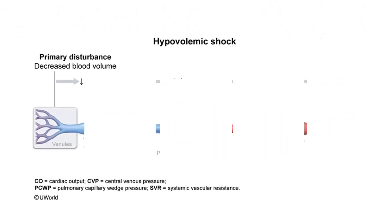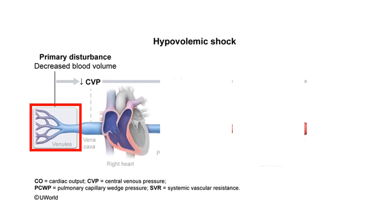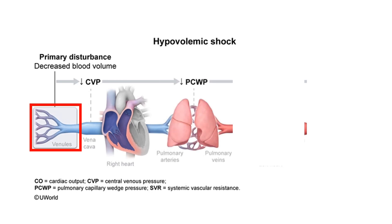In hypovolemic shock, the primary disturbance is decreased blood volume. If you have lost a lot of blood volume, less blood is returning to the right heart, and so that decreases central venous pressure — which is essentially the pressure of blood if the heart were to stop, mainly determined by blood volume. Because the right heart is not receiving enough blood, it won't pump enough blood to the lungs nor to the left atrium, so pulmonary capillary wedge pressure (PCWP) goes down. PCWP is a measure of left atrial pressure.